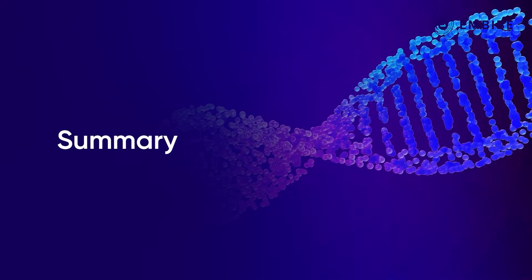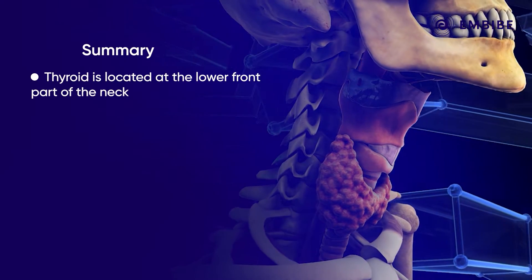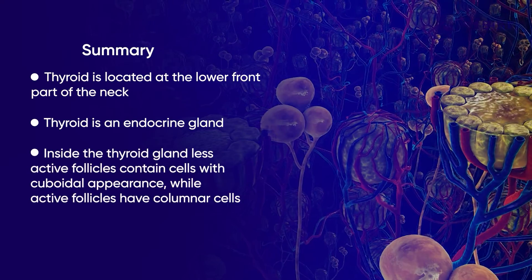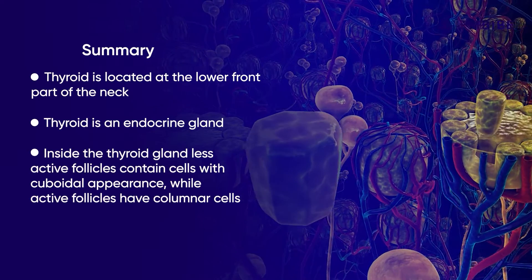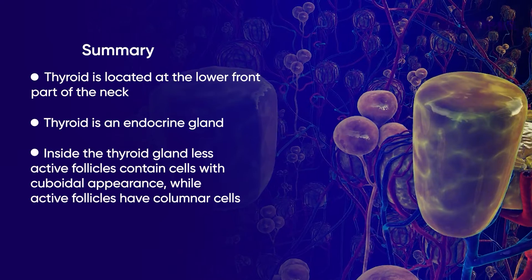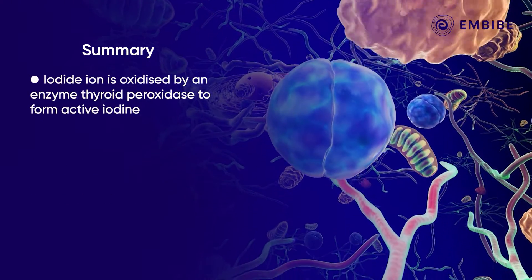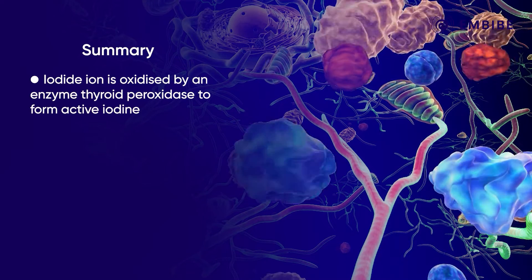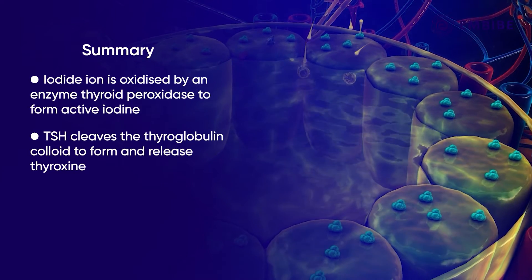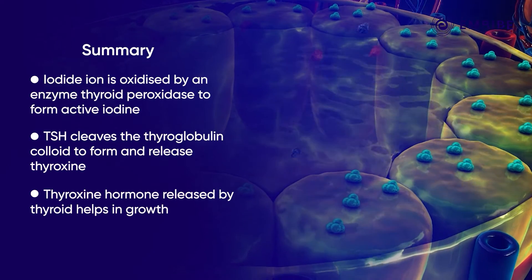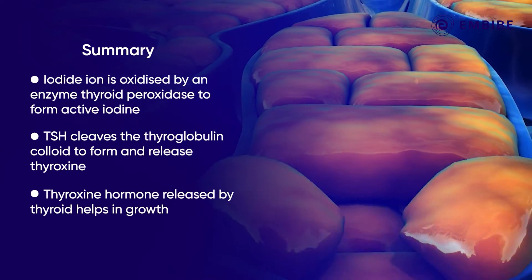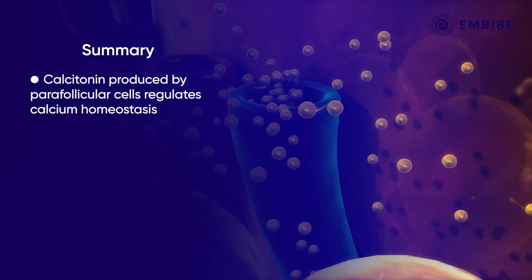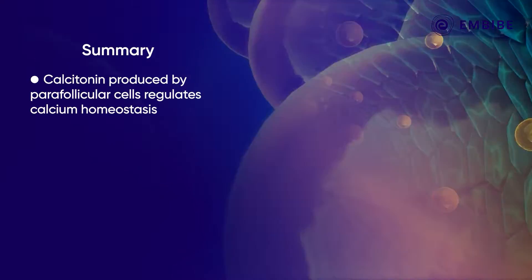To summarize: the thyroid is located at the lower front part of the neck, wrapped around the trachea. It is an endocrine gland which secretes hormones necessary for growth. The less active follicles contain cells with a cuboidal appearance, while active follicles have columnar cells. Once inside the follicular cells, the iodide ion is oxidized by thyroid peroxidase to form active iodine. TSH causes the colloid to cleave and release thyroxin. Thyroxin acts on tissue cells to help in growth. Para-follicular cells produce calcitonin, which travels to the bones and regulates calcium homeostasis.